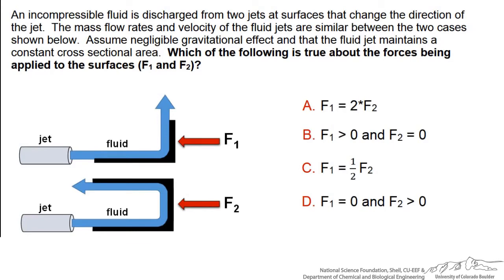Let's take a look at an example in which we have an incompressible fluid that is discharged from two jets. They have the same mass flow rates and velocities. We can assume that the cross sectional areas for these two jets are also constant. We are going to negate any gravitational effect that is occurring on these jets.